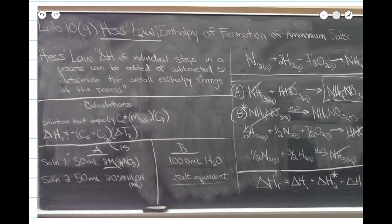Hess's law allows us to study the thermodynamics of a chemical reaction without performing the experiment in the lab. The enthalpy change — the ΔH — of an individual step in a process can be added or subtracted to determine the overall enthalpy change of the process. Through the additive property of ΔH, we can use a standard set of reactions to generate any other reaction. We just need to add the enthalpies of these standard reactions to get the enthalpy of our reaction of interest.